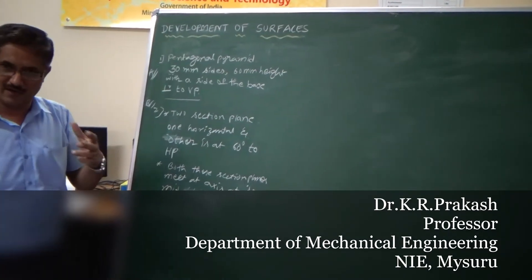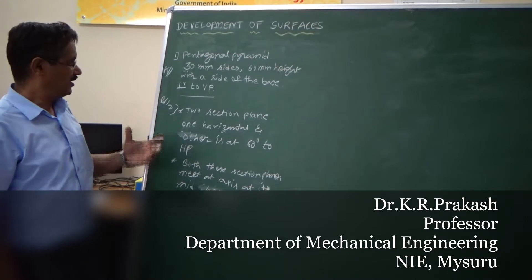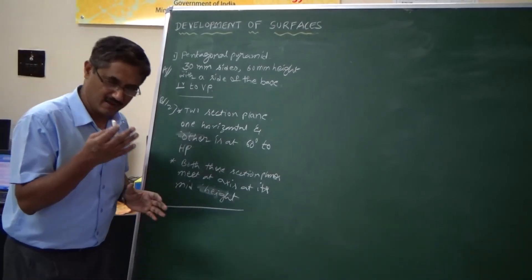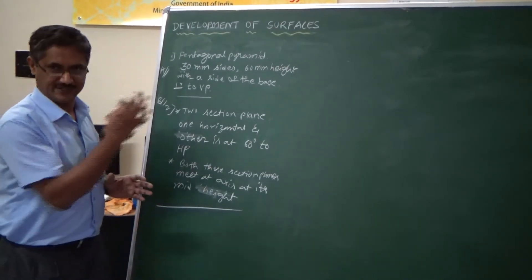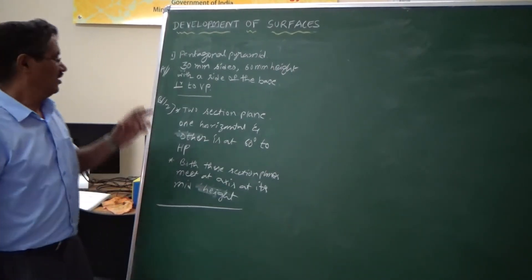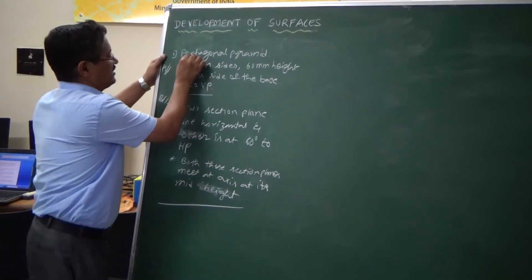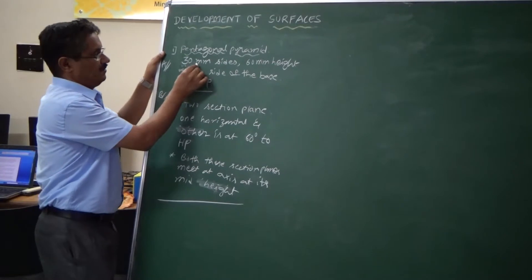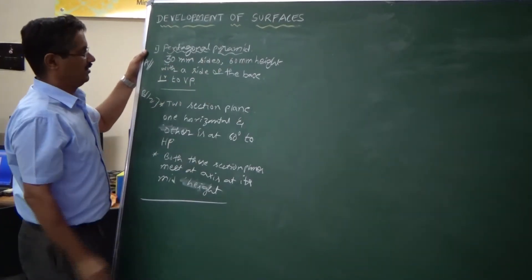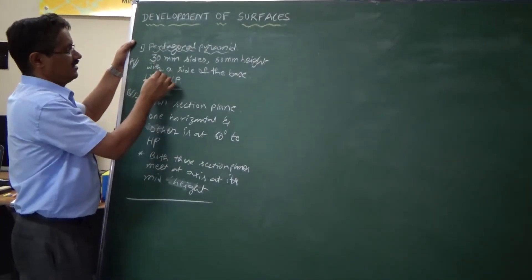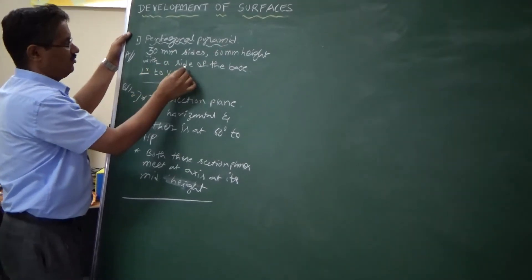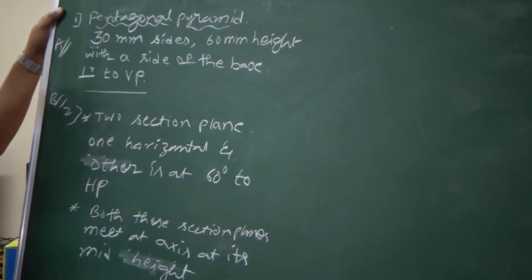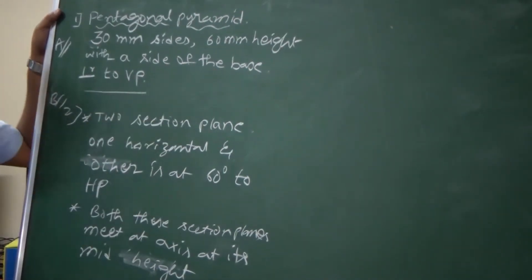We will solve one more pyramid problem. Here I will show you what happens when a section plane cuts the base or the shorter sides. Our problem is to consider a pentagonal pyramid where the sides are 30 mm and the height is 60 mm. The resting condition is that it rests such that one of the sides of the base is perpendicular to VP.